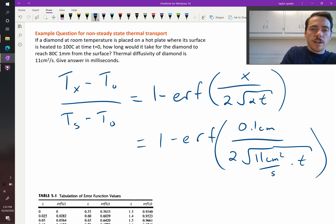We're going to set that equal to the left-hand side of the equation, which is 80 minus 25 degrees over 100 minus 25 degrees.